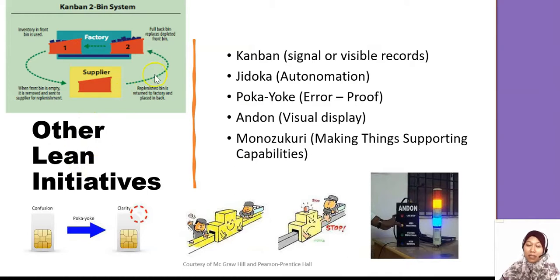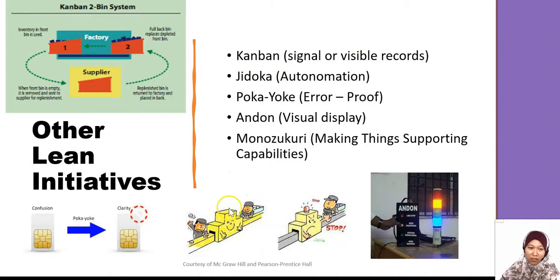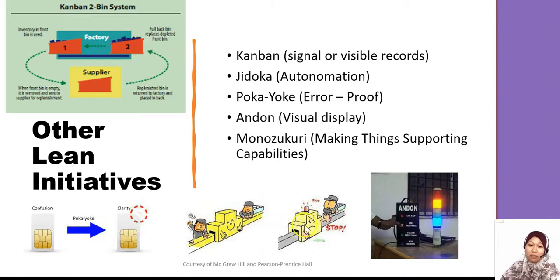Other lean initiatives you'll commonly hear about include Kanban — a pull system where you don't make anything more than your customer needs. Jidoka is automation — from before where you did things manually, now you have sensors to detect any defect, and if there's a defect, the line will automatically stop. That's what we mean by Jidoka.